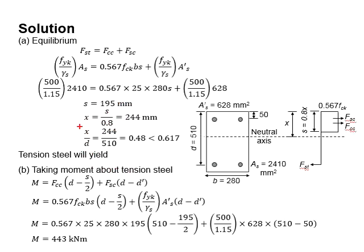Based on the ratio X per D equals 0.48, which is less than 0.617, you know that the tension steel would have yielded.